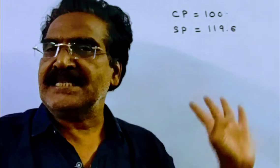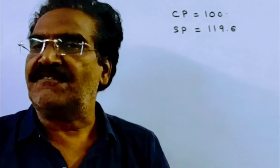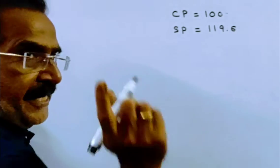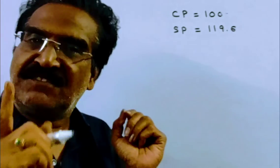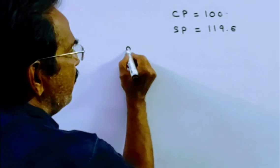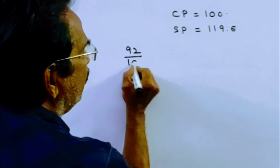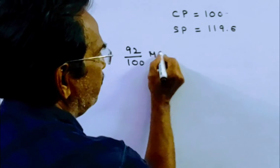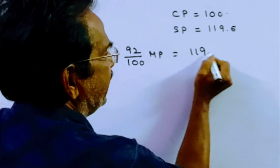Friends, this sold price is after a discount of 8%. So, this sold price must be equal to 92% of the market price. So, 92% of the market price is 119.6.